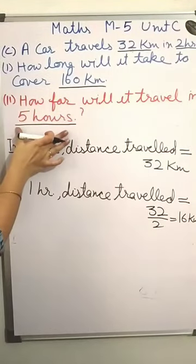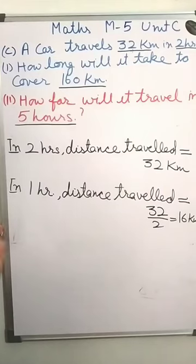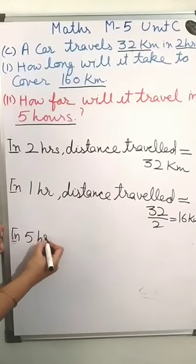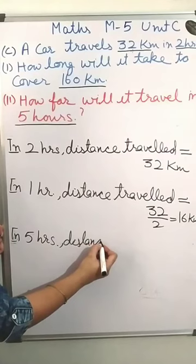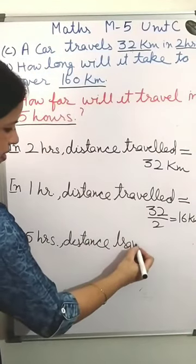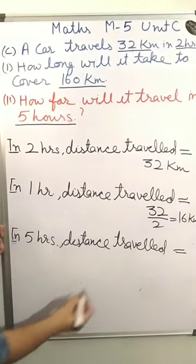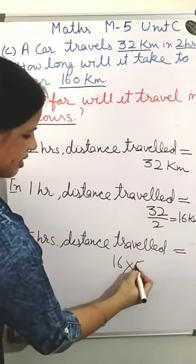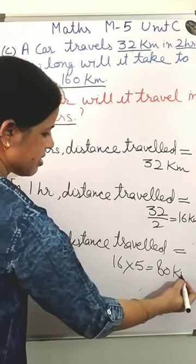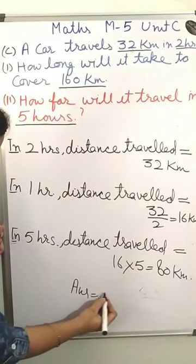Now here we have to calculate the value for 5 hours. The distance travelled in 5 hours — so in 5 hours, distance travelled is equal to 16 multiplied by 5, which is equal to 80 km. So this is the answer. The answer is 80 km.